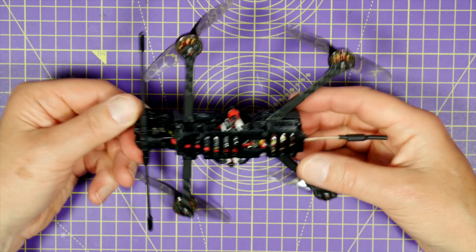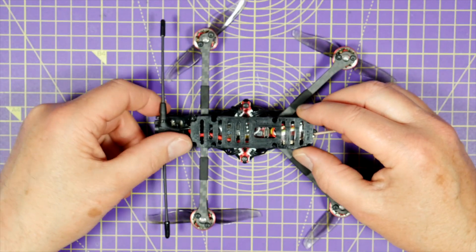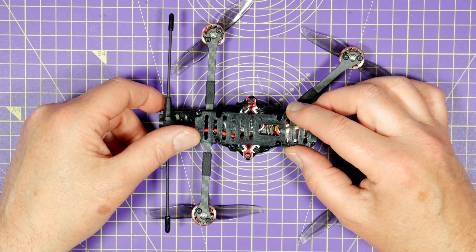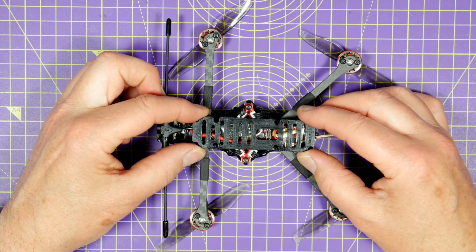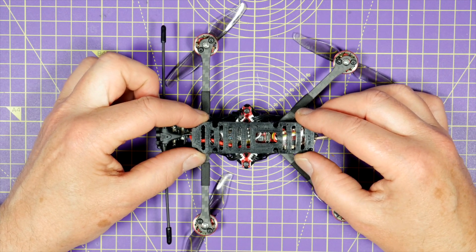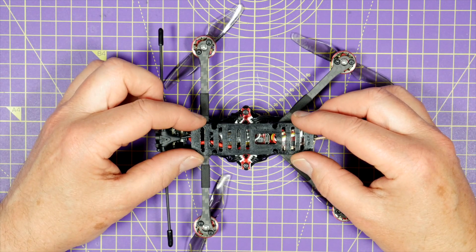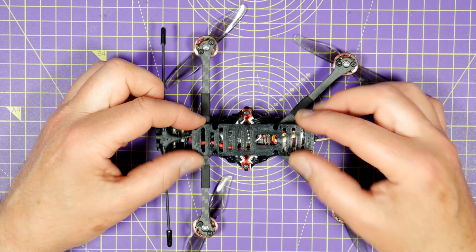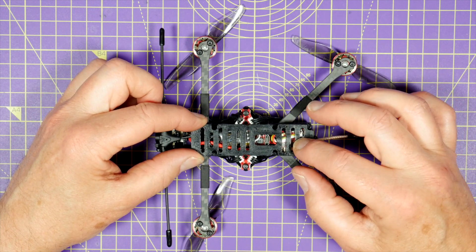The other thing to watch out for is hard landings. So when you get that land now warning, land. Or make sure you're over some grass. This bottom cage is 3D printed in PETG, which is a pretty strong 3D filament, but it's quite brittle. So a hard landing on a hard surface will probably crack or even break this.